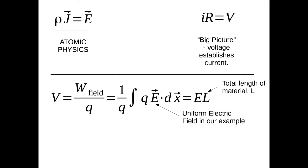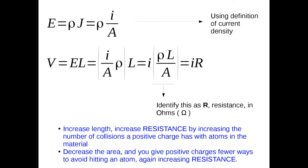Going back to the basic definition of current density: it is the current divided by the area of the material through which it's passing. If this were some kind of cylinder, we'd have some area A in meters squared that this current is passing through. Current per unit area — that's the definition of current density.